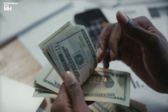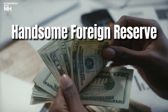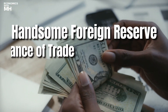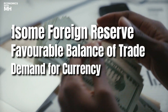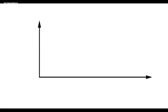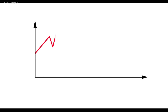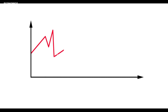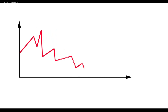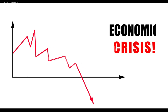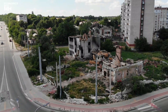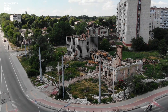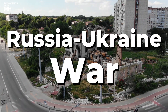Currency gets strength if a country possesses handsome foreign reserves, shows a favorable balance of trade, or there's huge demand for that currency in the international market. Due to the negative trend in all of these, the Pakistani rupee plunged to the lowest ever value in history, with more than 60% loss of value in just one year. Moreover, disruption in the international economy due to the Russia-Ukraine war added fuel to the fire.